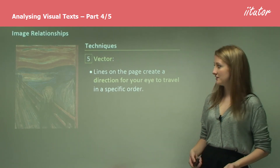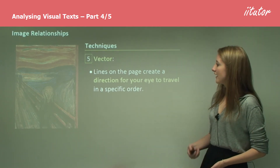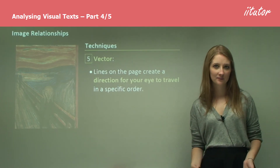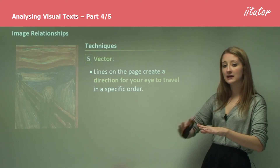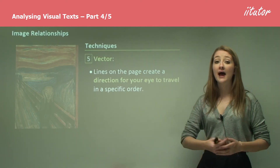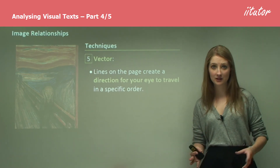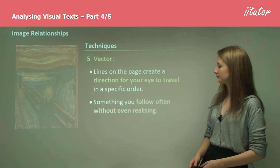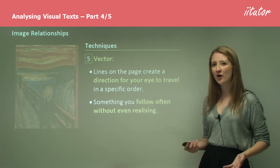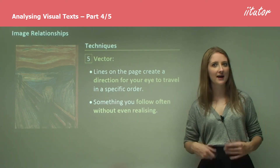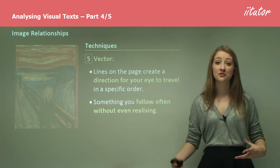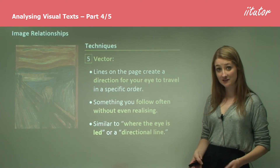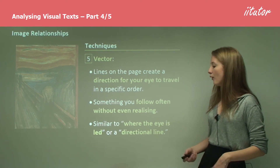A fifth technique which you can use is a vector. A vector consists of lines on a page which create a direction for your eye to travel in a specific order. It gives you a starting point and then leads you across the page. The lines demonstrate the way in which the author of the image wants you to view it — the lines direct your eye across the image. This gives you something to follow, and often this is a subconscious thing you do without even realizing. It's the thing that the composer uses to make you look at the image the way he wants you to. This is similar to the idea of where the eye is led, or a directional line.